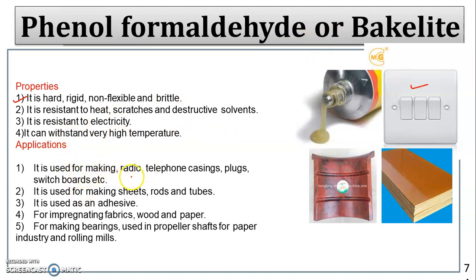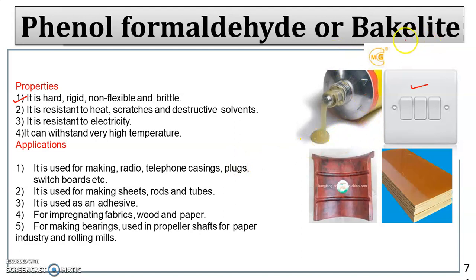Applications of Bakelite: it is used for making radio and telephone casings, plugs, switchboards, and radio and telephone cabinets. It is also used for making sheets, rods, and tubes.